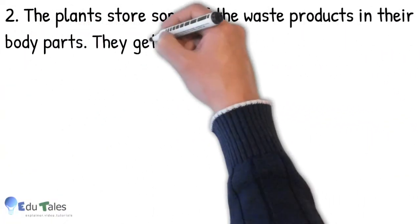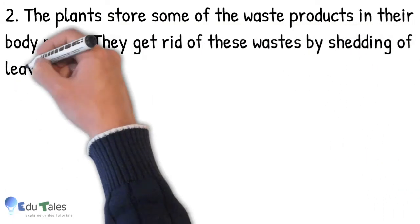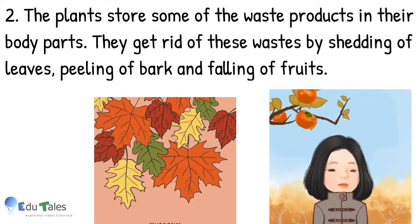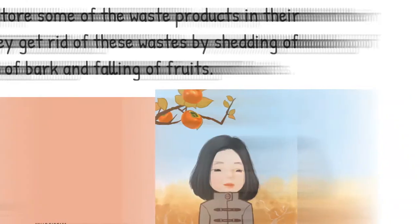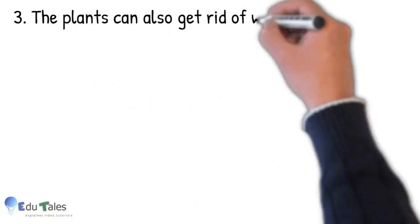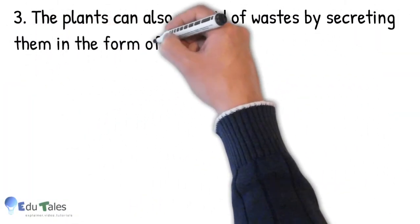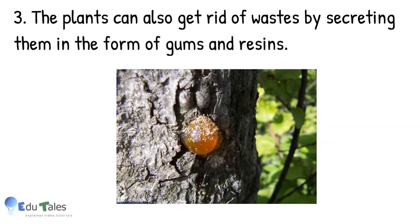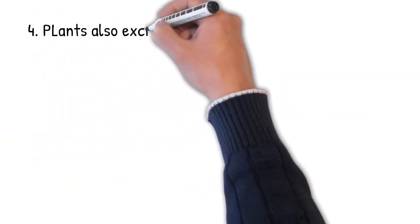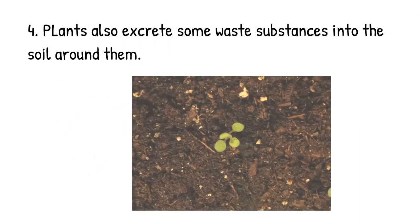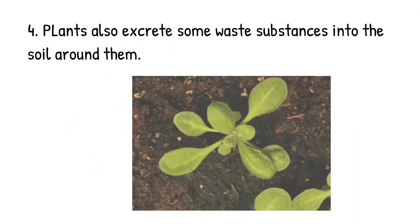Second, the plants store some of the waste products in their body parts. They get rid of these wastes by shedding of leaves, peeling of bark, and falling of fruits. The plants can also get rid of wastes by secreting them in the form of gums and resins. Lastly, plants also excrete some waste substances into the soil around them.